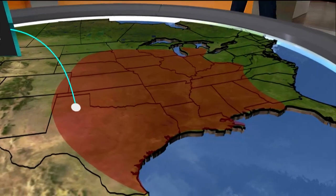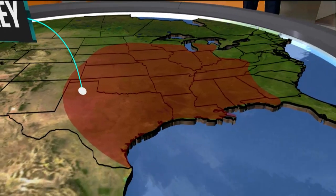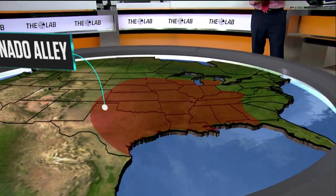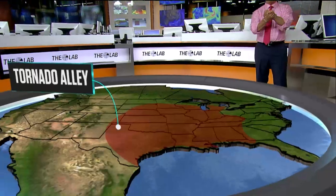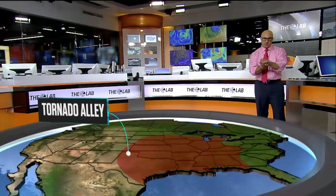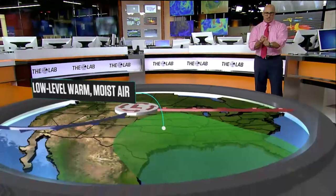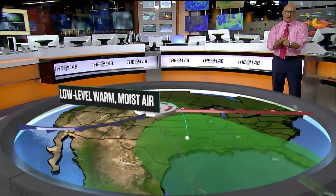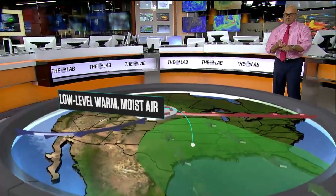But there are key things that set up within this alley on a very frequent basis that give us a chance for tornadoes. They are instability and heat, and deep layer shear — or change in wind direction with height — environmental shear.